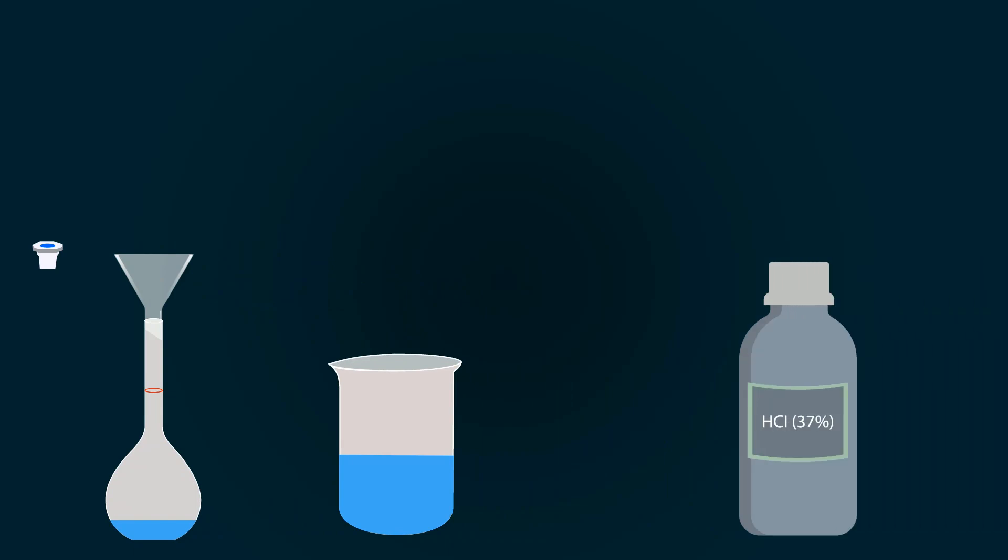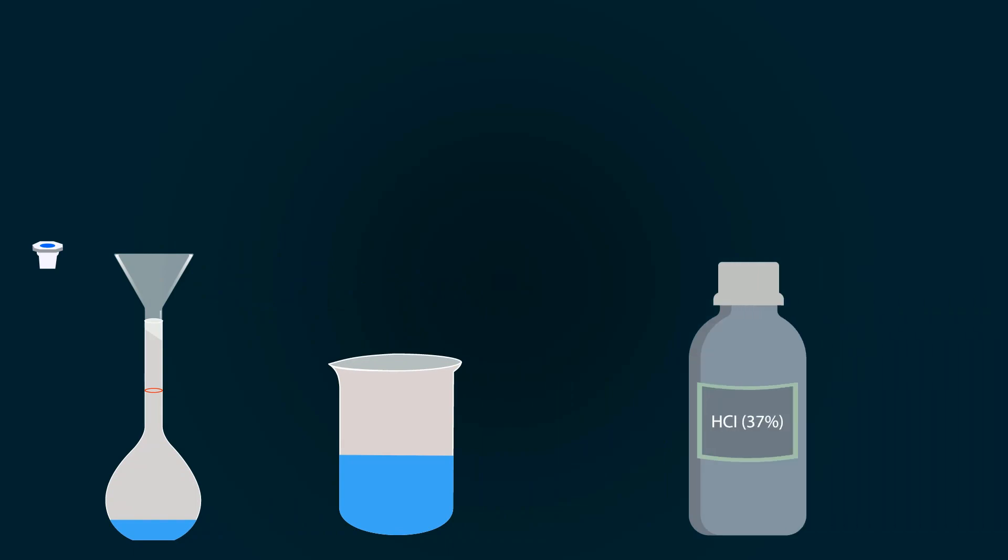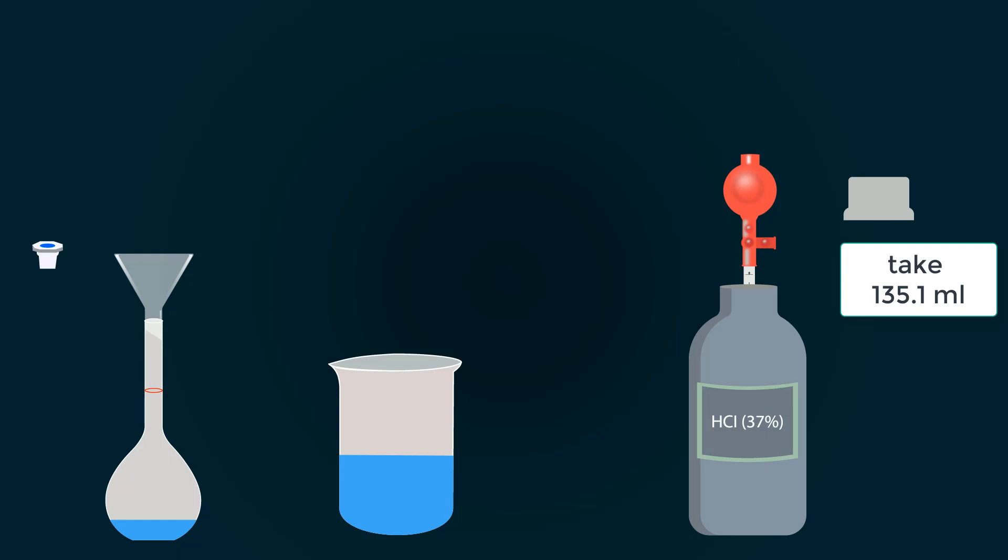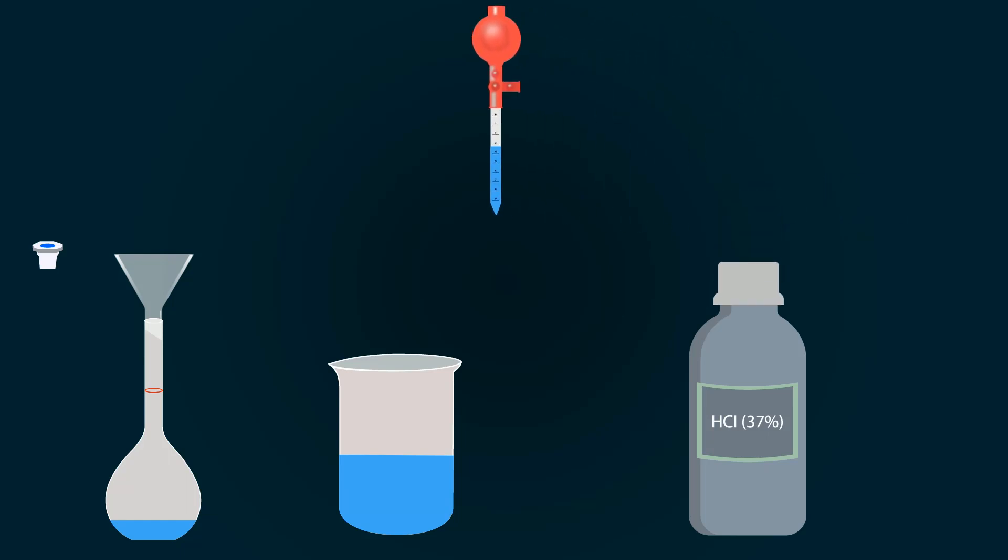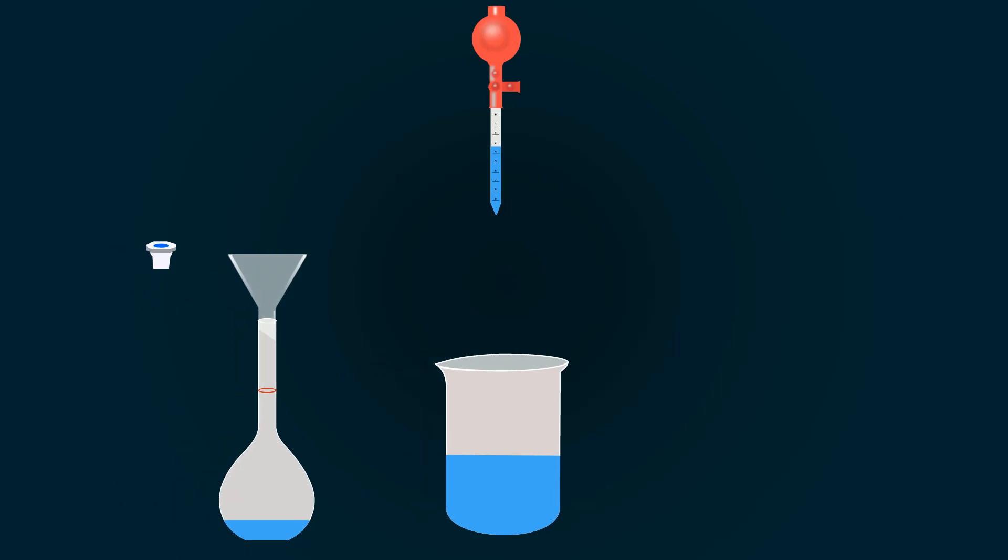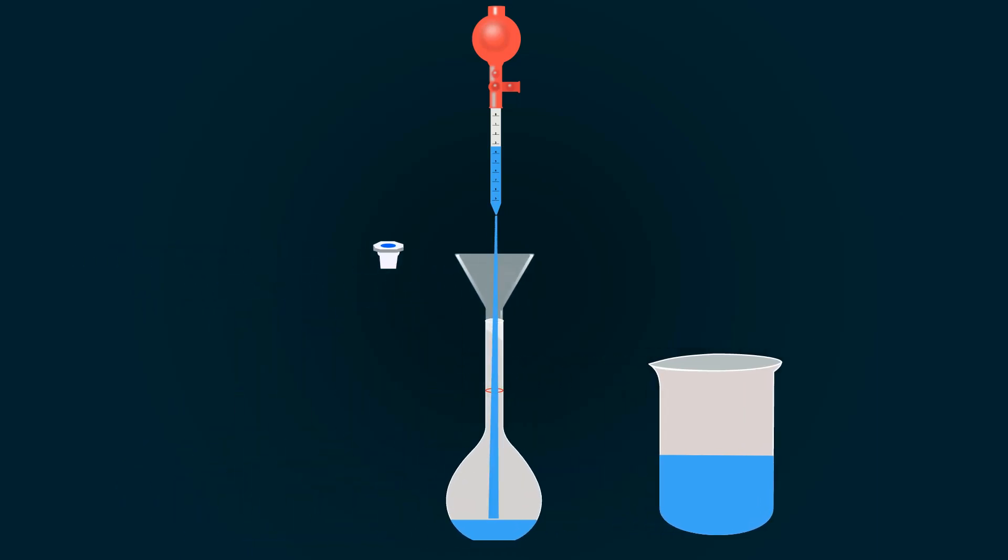Now take the bottle of 37% HCL. Open the lid and pipette out the required volume, which is 135.1 milliliters. Now pour this into the volumetric flask.